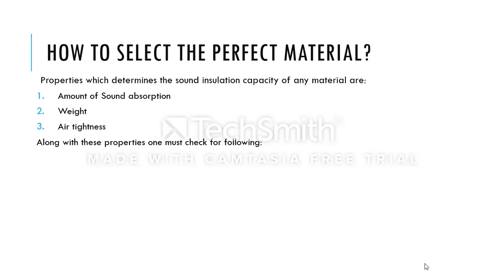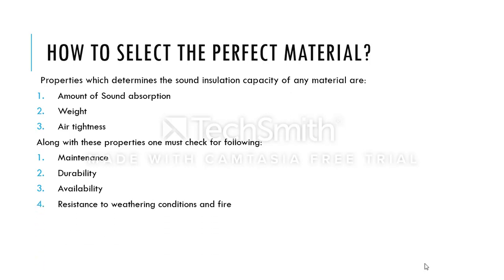Along with these properties, one must check for the following: maintenance — a material should have less or no maintenance; durability — a material should be durable; availability — it should be easily available; resistance to weathering conditions and fire — it should be resistant to different weathering conditions and be fire resistant; it should be cost effective and affordable; ease of application — it should be applicable easily; and aesthetics — it should have a good and aesthetical appearance. These are the properties necessary while selecting the perfect material for sound insulation.